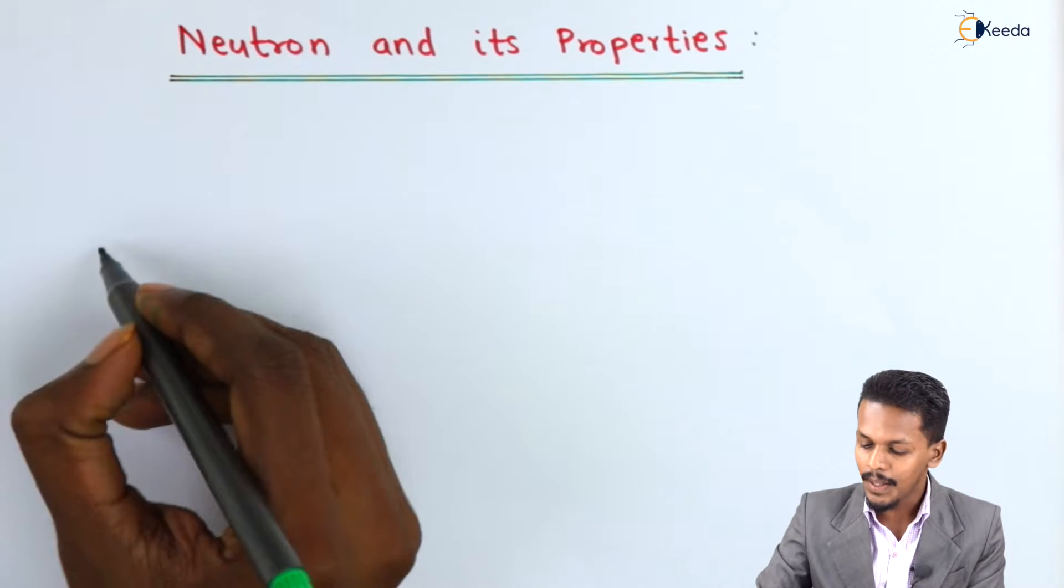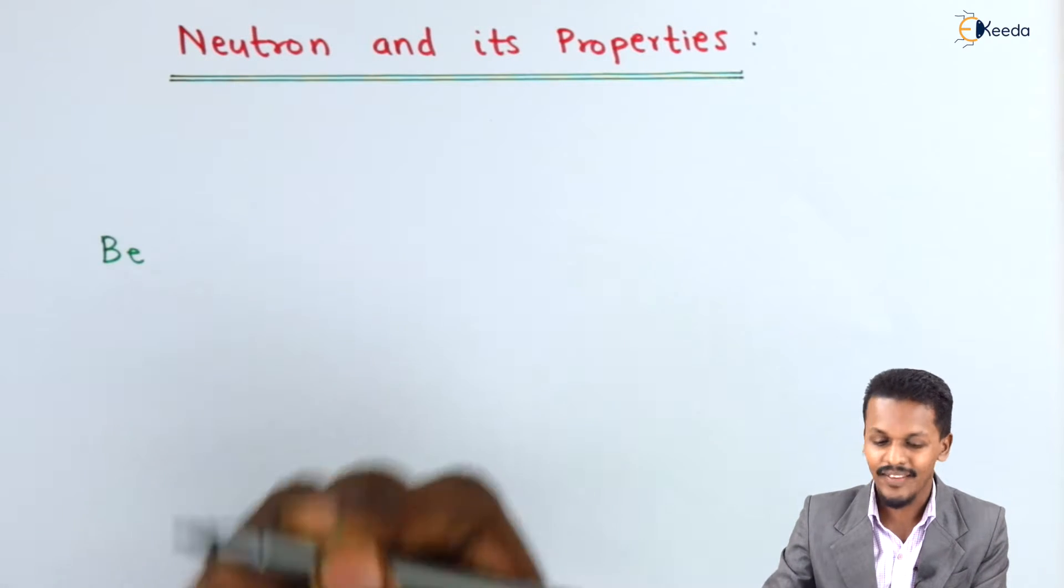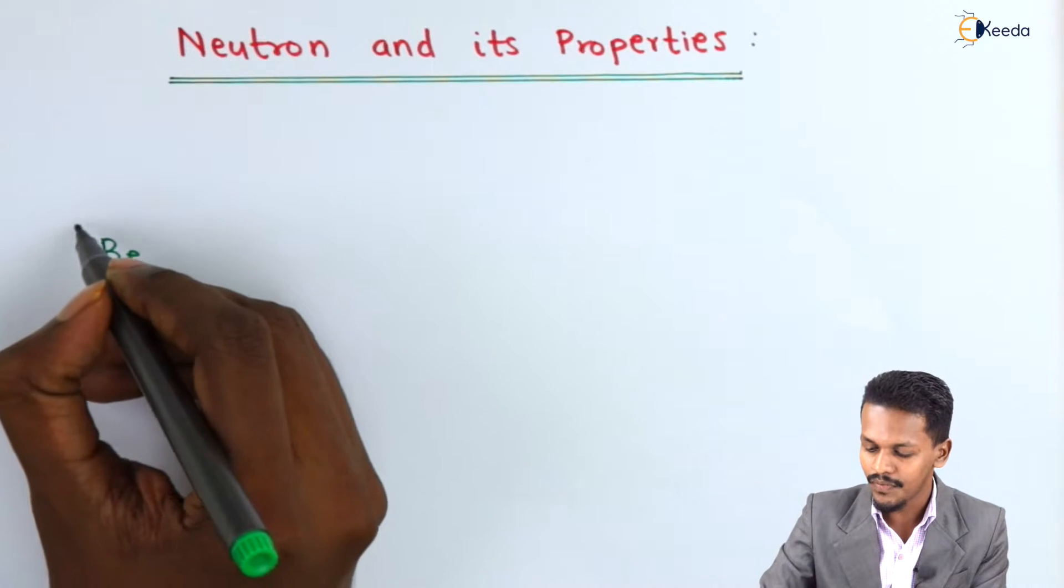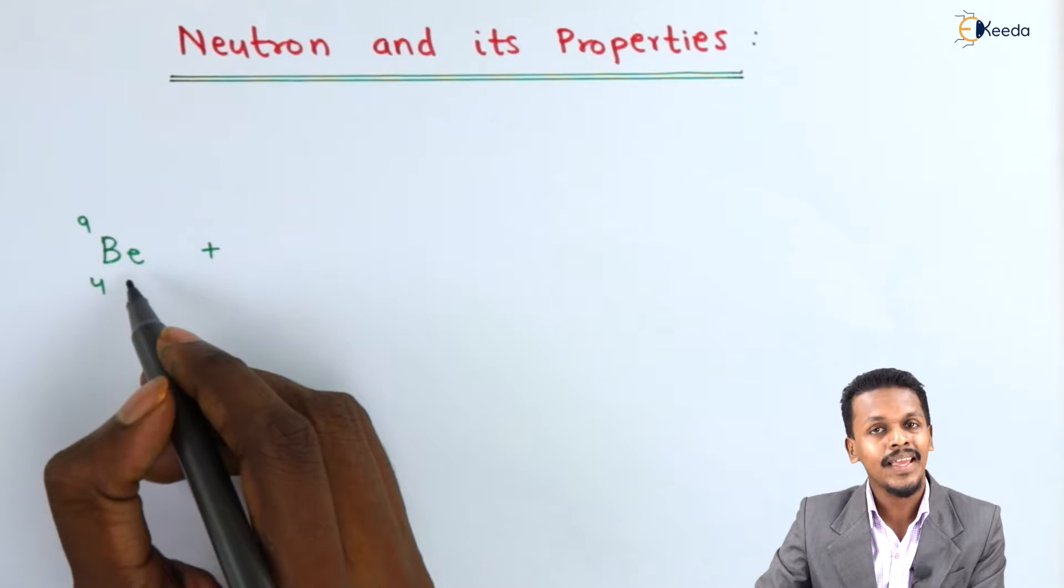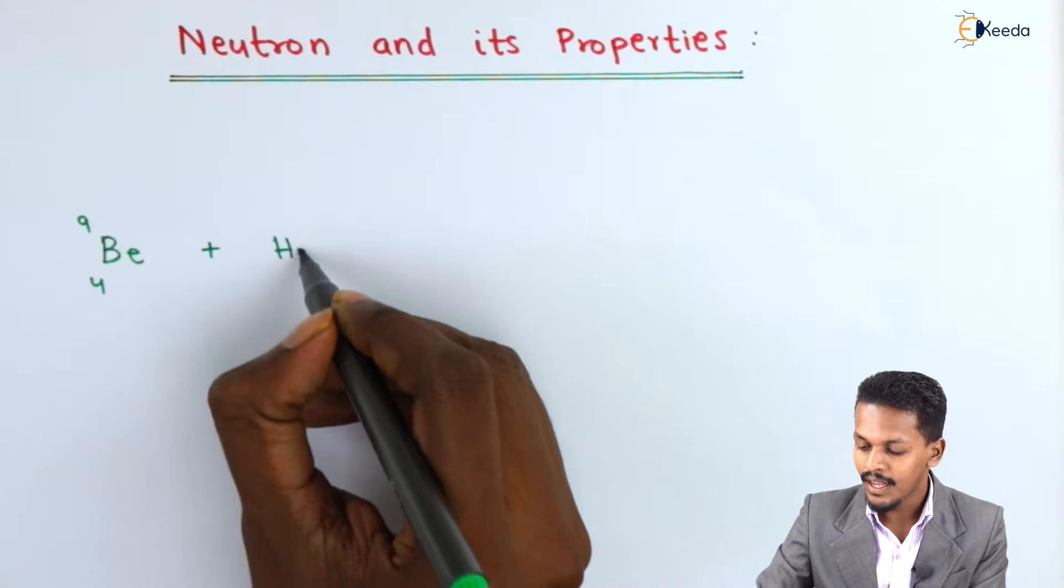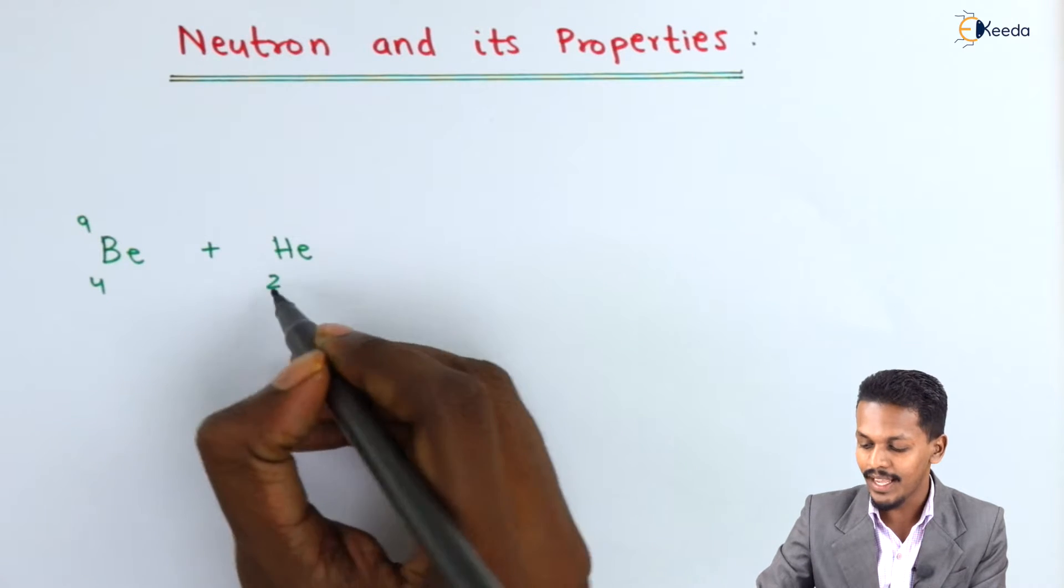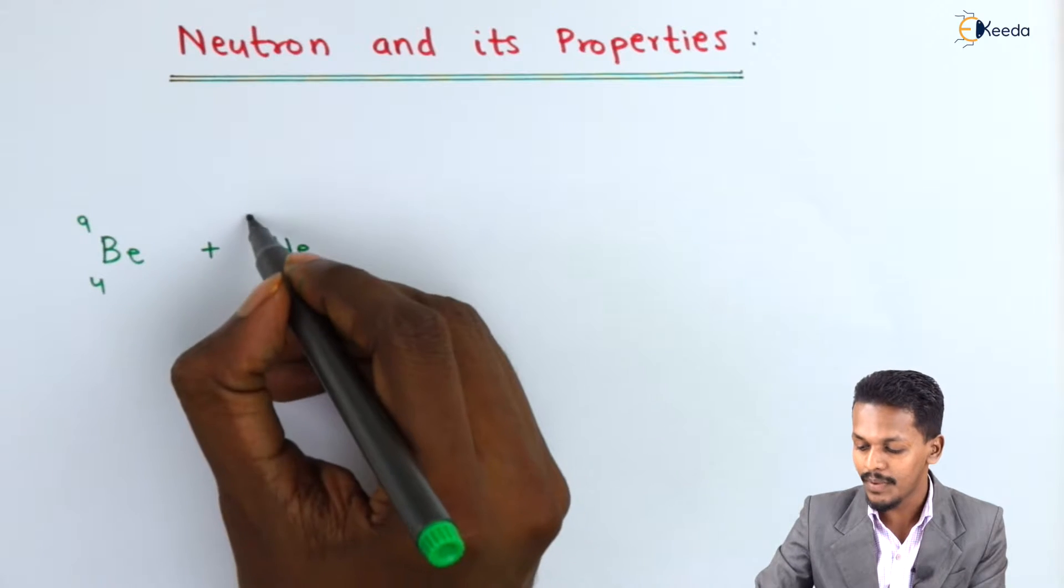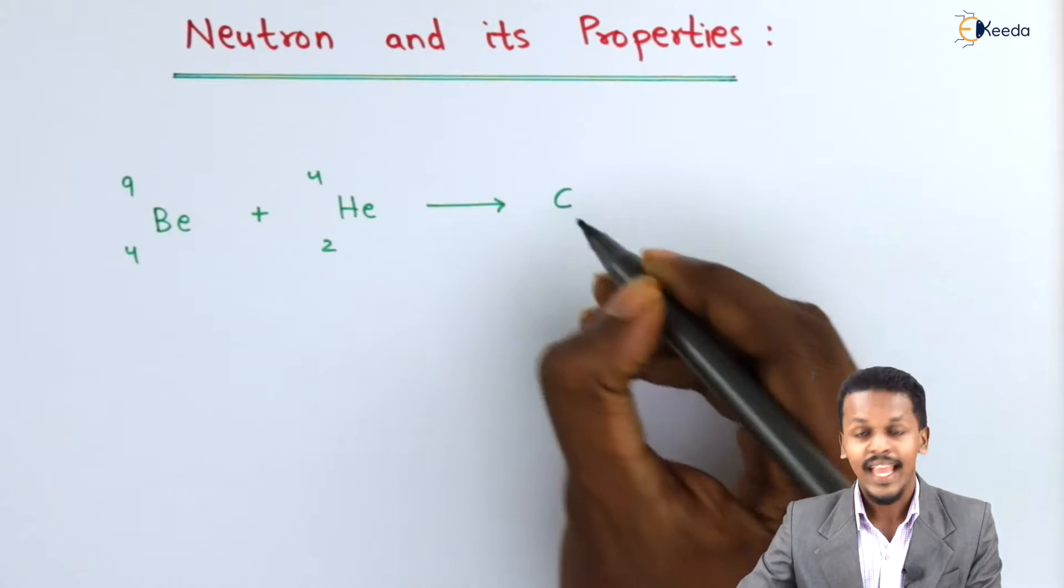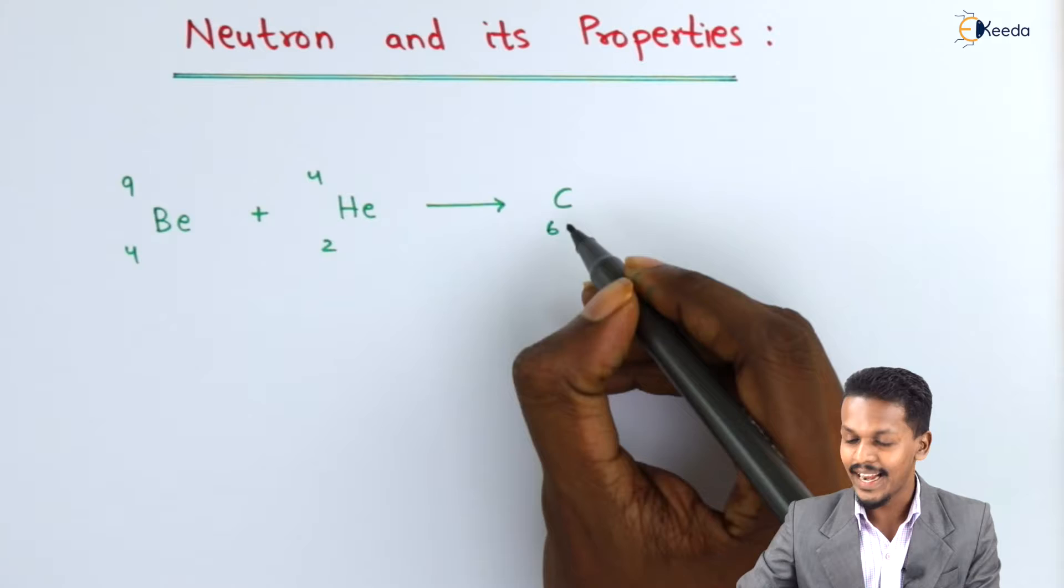For example, if we consider beryllium having an atomic number of 4 and atomic mass of 9, and suppose this beryllium is bombarded with high velocity helium having an atomic number of 2 and atomic mass of 4, the product formed is carbon having an atomic number of 6 and atomic mass of 12.